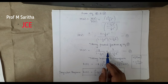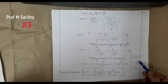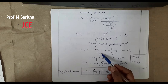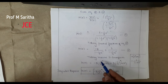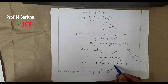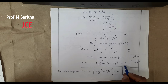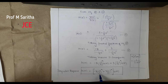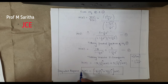Taking the inverse Z-transform using a^n u(n) ↔ 1/(1 − az^(−1)): h(n) = −2·(1/3)^n u(n) + 3·(1/4)^n u(n). Taking u(n) common, the impulse response is: h(n) = [−2·(1/3)^n + 3·(1/4)^n] u(n). This is the impulse response of the given system.